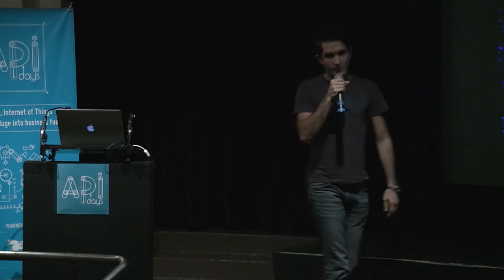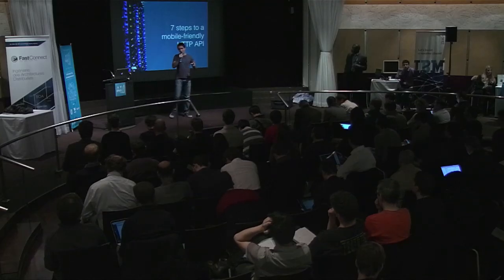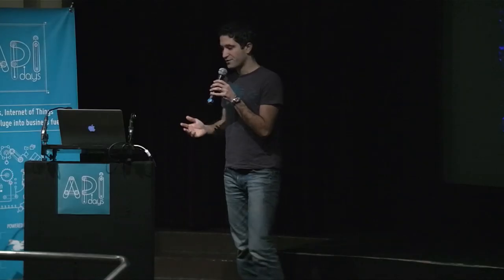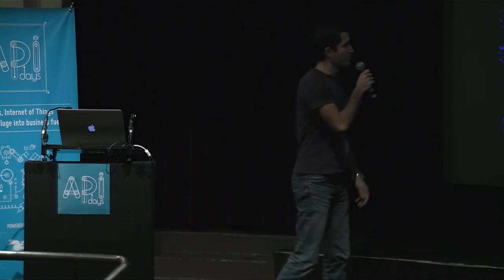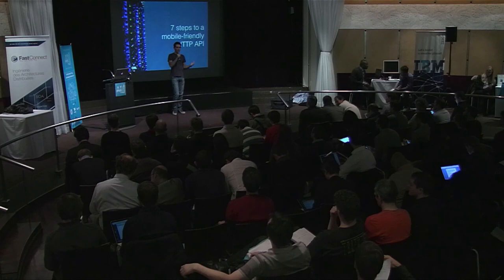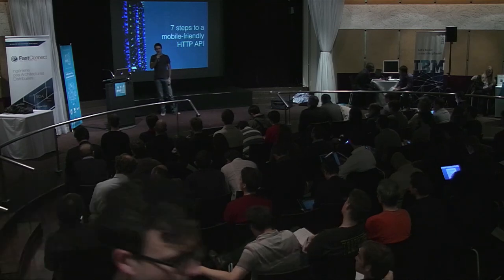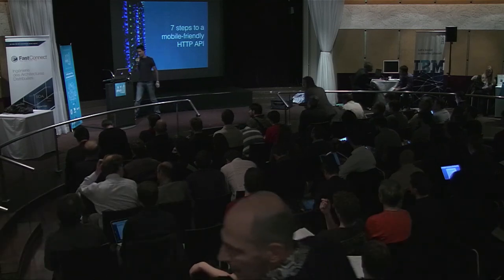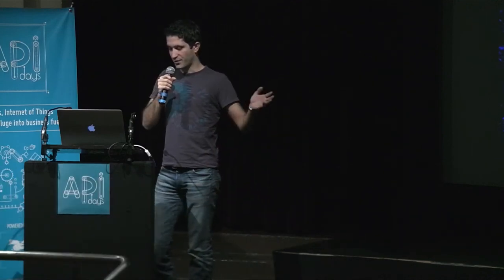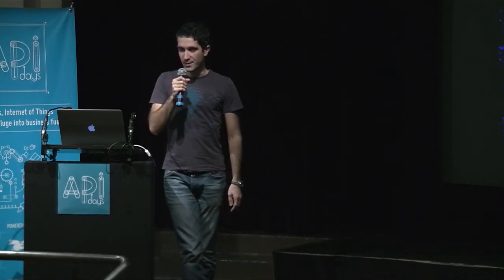Just take the top rankings on the App Store — you'll find Twitter, Facebook, whatever — they all use an HTTP API. So obviously we've dealt with a lot of APIs, and sometimes it was good, but very often there were some weird errors in the APIs we were using. So I'm going to give you seven steps to build a better API for mobile clients.